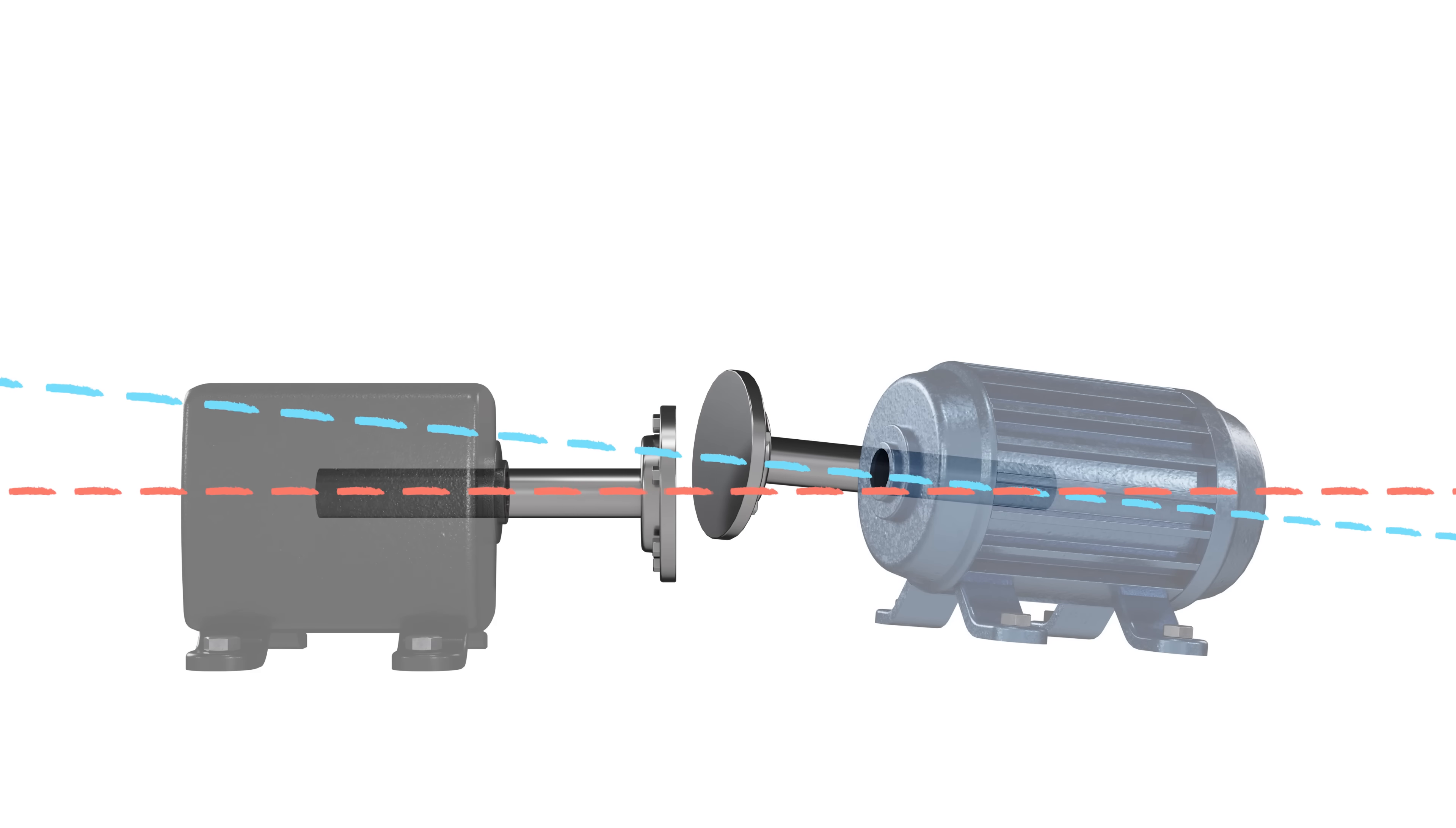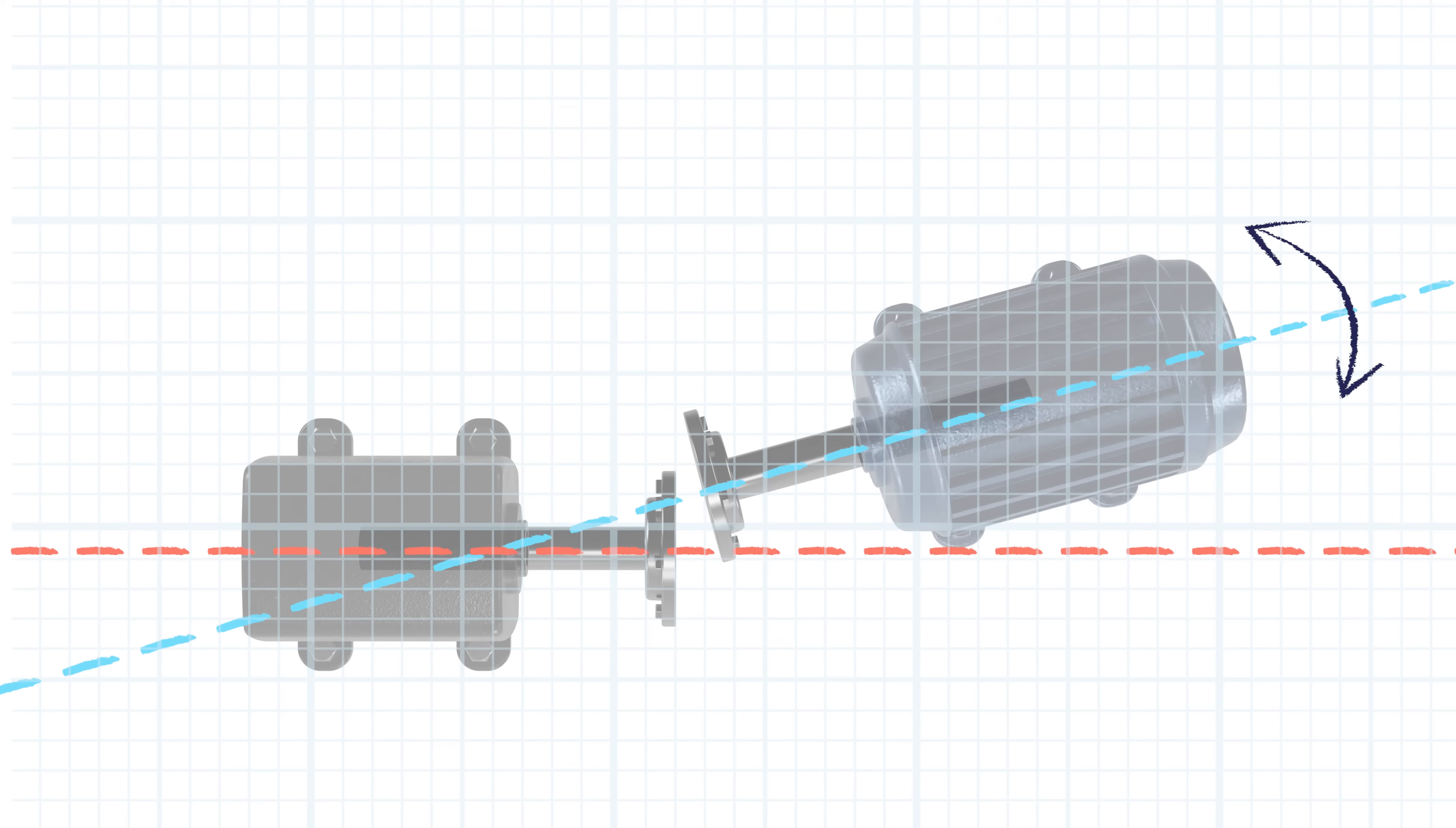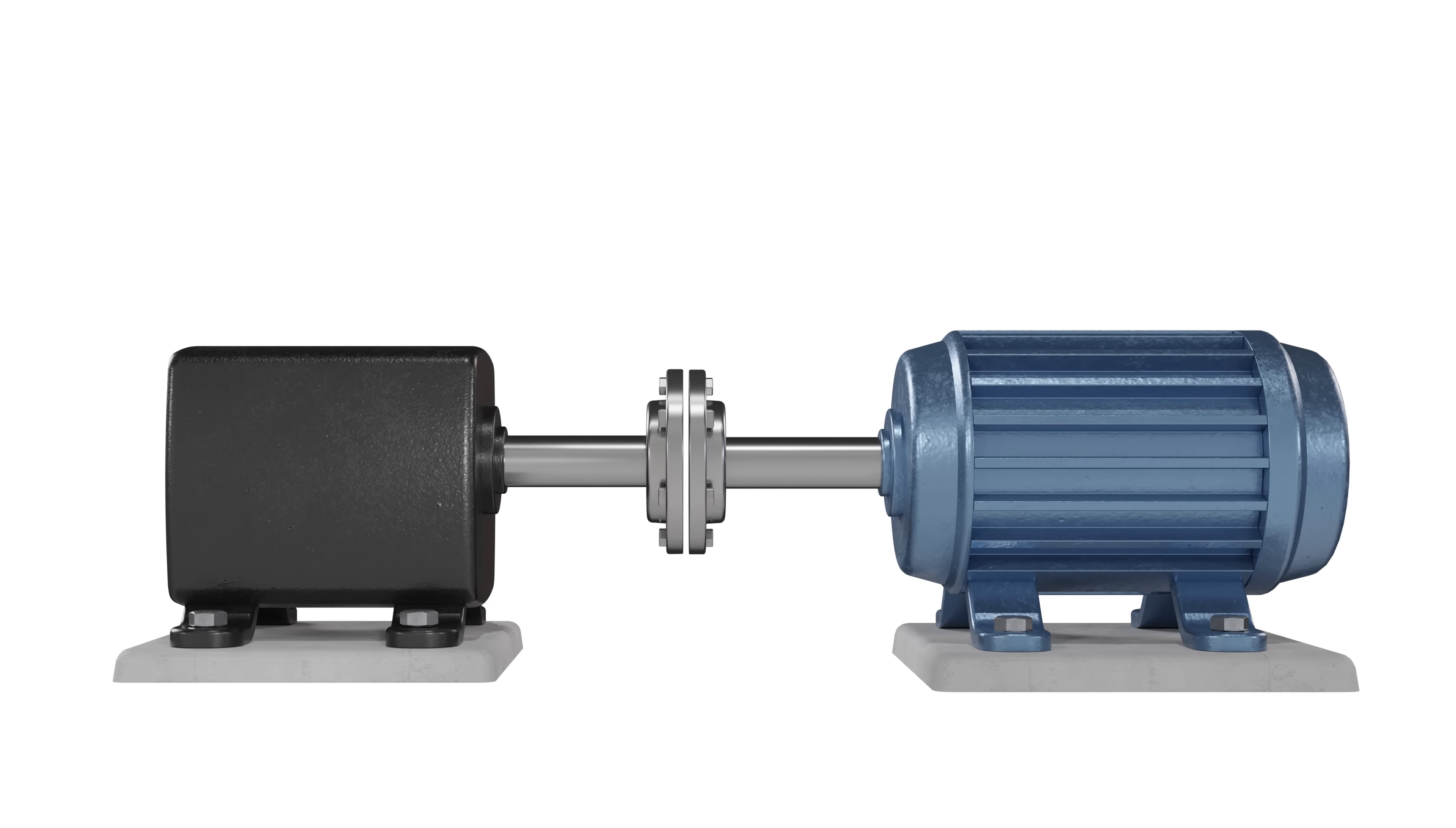Fortunately, we are able to adjust the relative position of the two shafts in these two dimensions. We can raise or lower the movable machine in the vertical plane and we can move it side to side in the horizontal plane. If we get the shafts aligned in these two dimensions or planes, they will then be in tolerance and close to collinear.